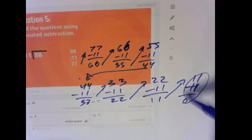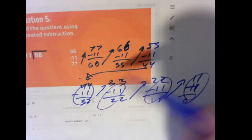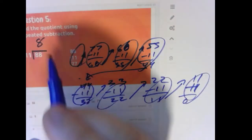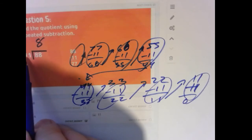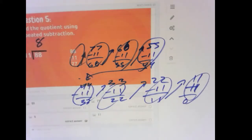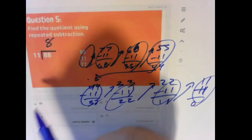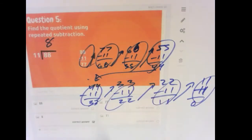How many cycles? 1, 2, 3, 4, 5, 6, 7, 8. So if you subtract 11 from 88 eight times, you get down to 0. Or 88 divided by 11 makes 8. Or 8 times 11 makes 88.